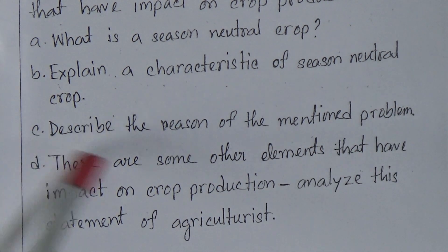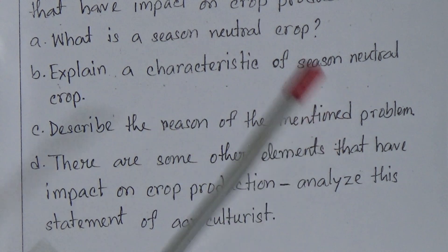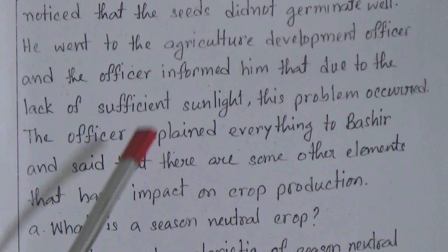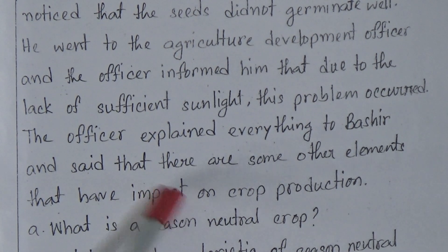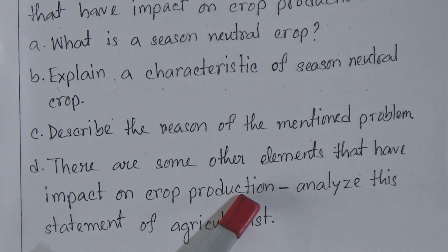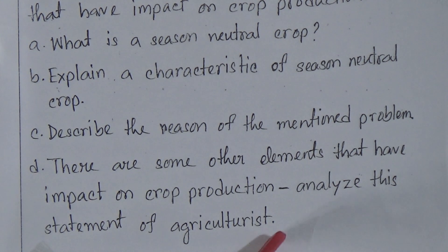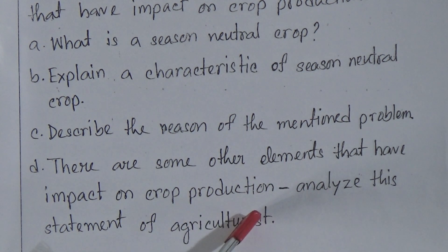Question number C: Describe the reason of the mentioned problem. So what is the problem? We will find it out from the stem. We can understand that lack of sufficient sunlight is the main problem to grow maize crops. Question number D: There are some other elements that have impact on crop production — analyze this statement of the agriculturist. We will also know about those elements that can affect the cultivation of maize crops and have a great effect on agriculture.